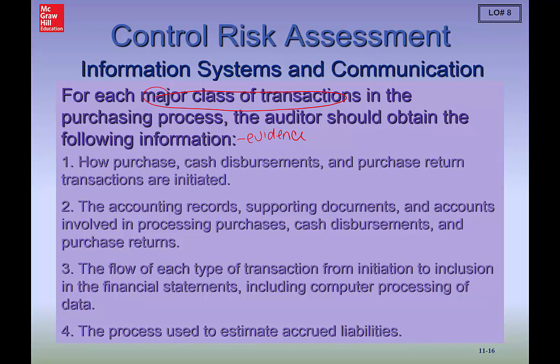In the accounting records, do we have adequate supporting documents for the one, two, and three-way match? One being the purchase order, two being the receiving and shipping information, and three being the actual invoice — ensuring it was paid in proper time and what payment method was used. You also want to document the flow of each type of transaction from its inception all the way to its recording in the financial statements.